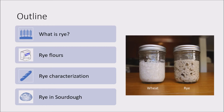So an outline for today's presentation. This picture on the right-hand side shows a wheat sourdough starter and a rye sourdough starter. If you would like to see some of the visual differences between rye and wheat starters and what kind of happens during their fermentation and the different textures within each of them, I highly encourage you to check out my sourdough starter feeding video. The outline includes defining what rye is, a discussion of different rye flours around the world, characterizing rye and its proteins, sugars, and enzyme activity, and how those influence bread making with rye, and finally a look at rye in sourdough baking.